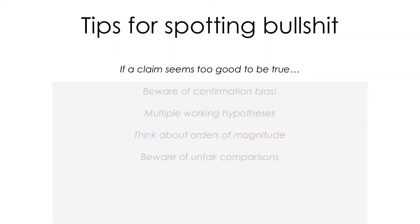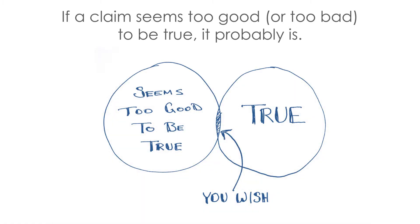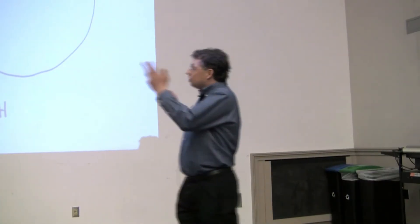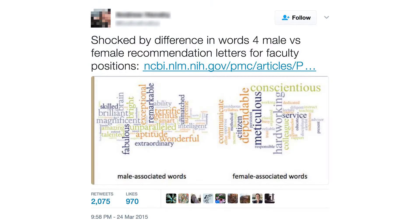So I'm going to start with the very start. Let's start out if a claim seems too good to be true. If a claim seems too good to be true, or too bad to be true, it probably is, right? So let's jump right into an example. A friend of mine tweeted this a year ago, and I'll explain what this is.